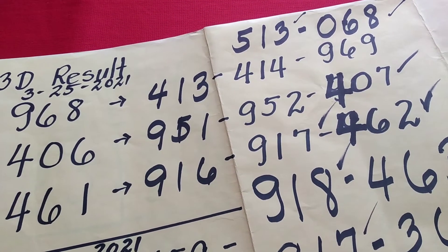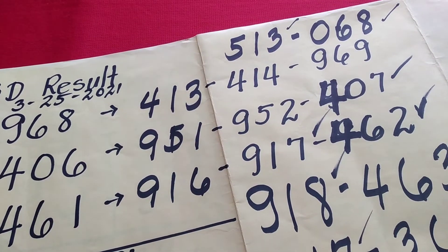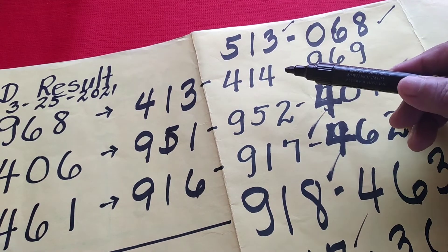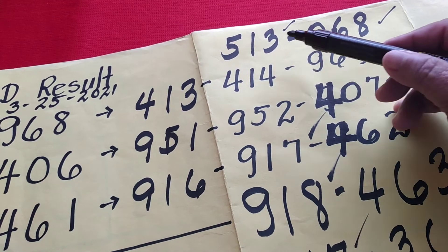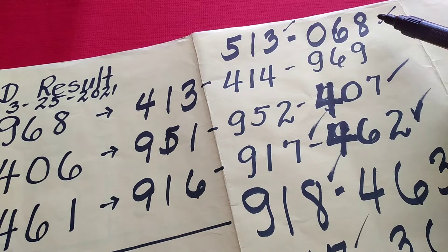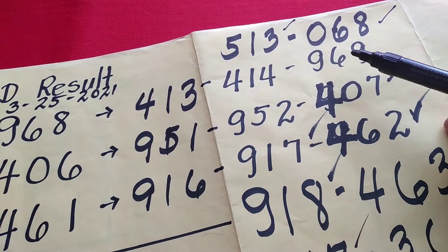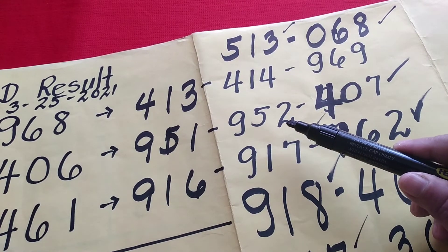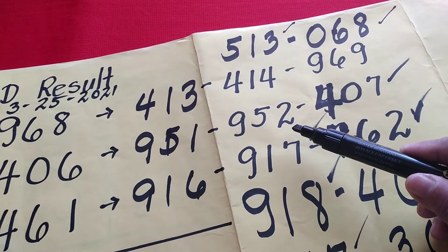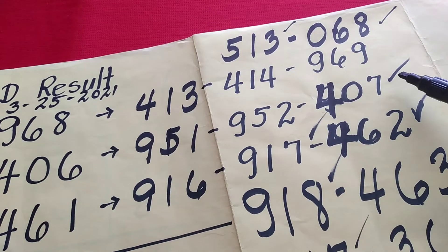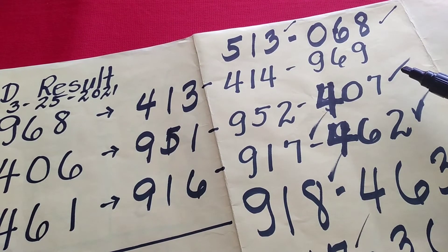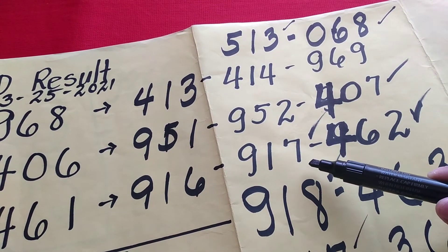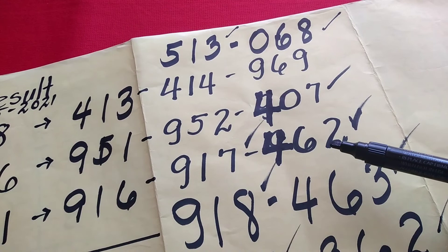Ang 9, 6, 8 equivalent ay 4, 1, 3. Yung 4, 1, 3 maaari yan maging 5, 1, 3 o di kaya 4, 1, 4. Ang 5, 1, 3 ang equivalent ay 0, 6, 8. Ang 4, 1, 4 ay 9, 6, 9. Ang 9, 5, 2, dagdagan natin ng isa. Lumabas na ito. Pero yung 4, 0, 7 ay hindi pa. Ang 9, 1, 6, dagdagan natin ng isa, ito ay magiging 9, 1, 7. Ito ay magiging 4, 6, 2.